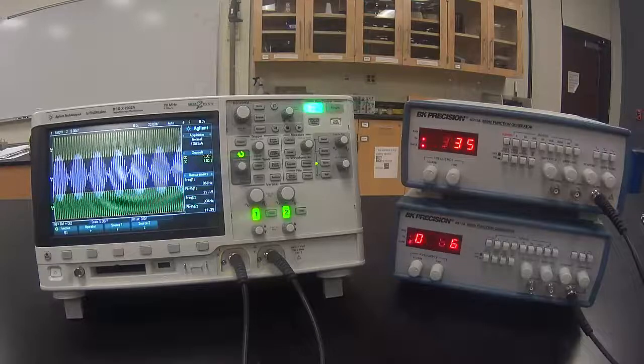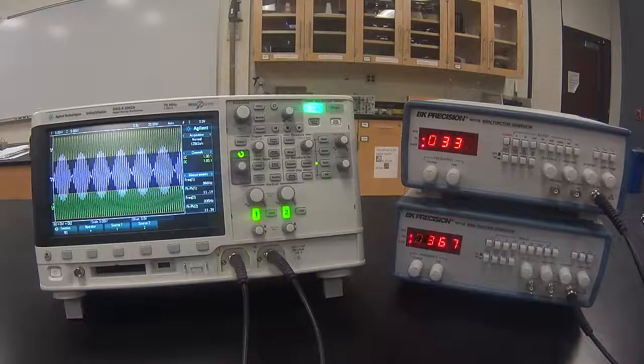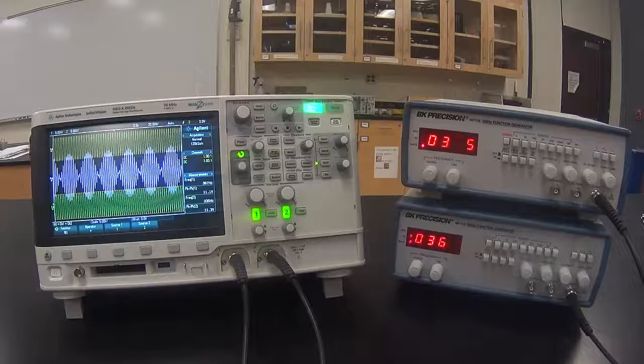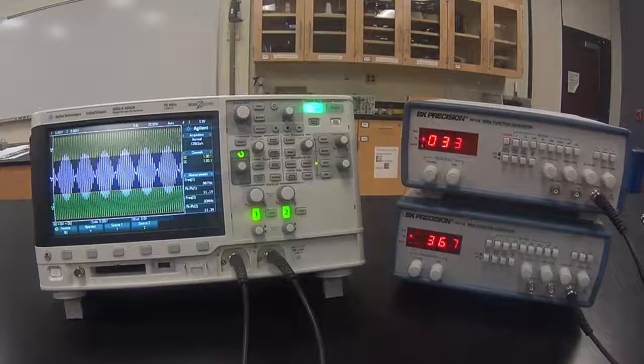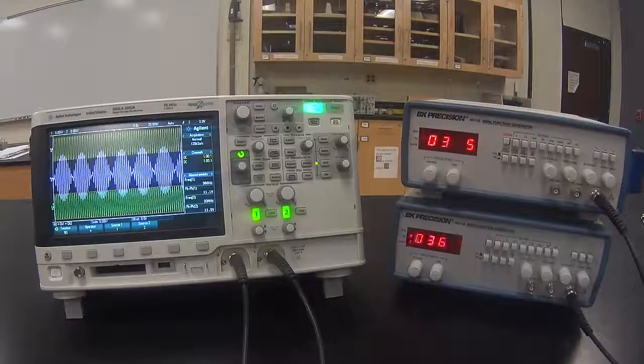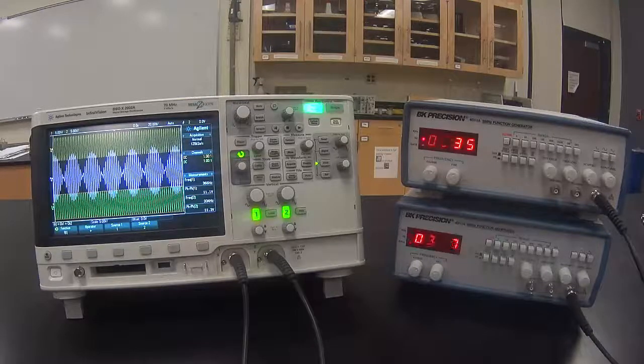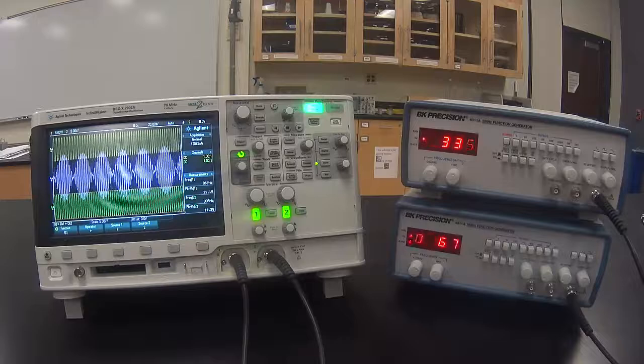If these were sound waves, they would sound like wah, wah, wah, wah. The frequency that you hear is the average of the two frequencies, and the frequency of the beat is the difference between the two frequencies.